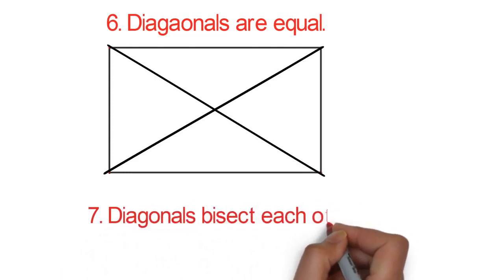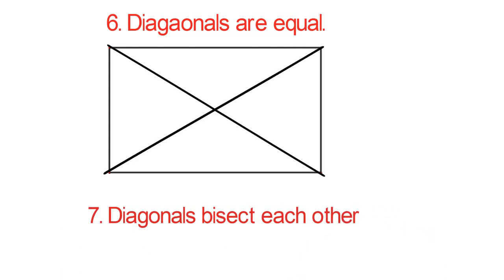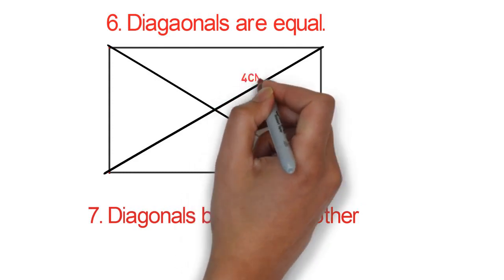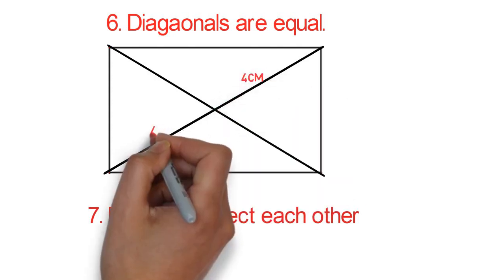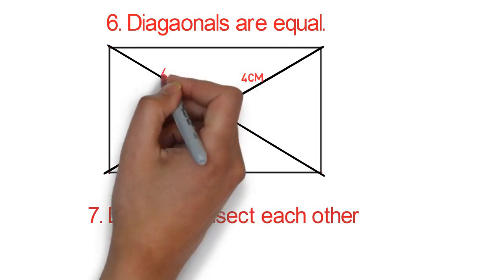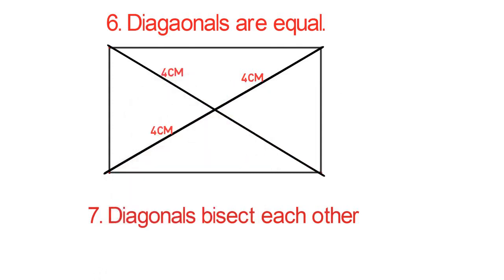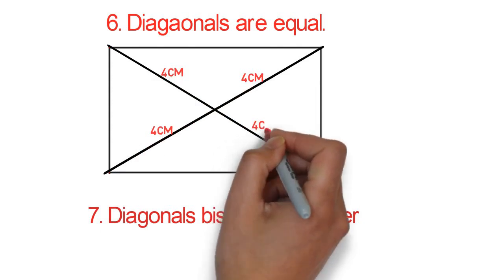Seven: diagonals bisect each other. The word bisect means to cut into half. Can you see that the diagonals cut through each other? It divides the diagonal into two equal halves. So if this side is four centimetres, this is also four centimetres. And if this is four centimetres, this is also four centimetres.